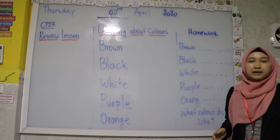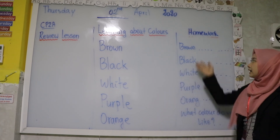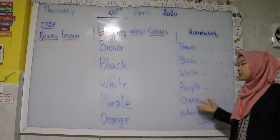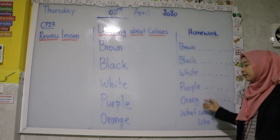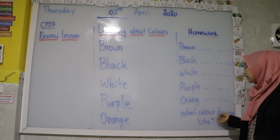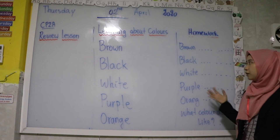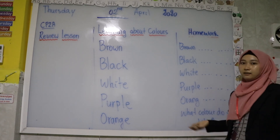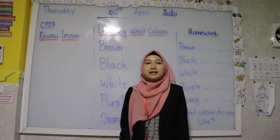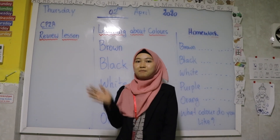That's all for our lesson today. This is your homework: you have to write each word — brown, black, white, purple, orange — five times. And tell me what color you like. For me, I like brown. That's all for today. Thank you for your attention. Bye-bye.